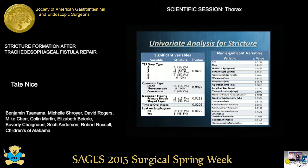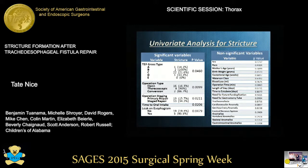The univariate analysis found five variables that were significant for association with stricture formation. These are shown on the left side of the screen, while the non-significant variables are on the right side. Significant variables included the TEF gross type, the operation type, the staging of the operation, time to oral intake, and post-operative leak.